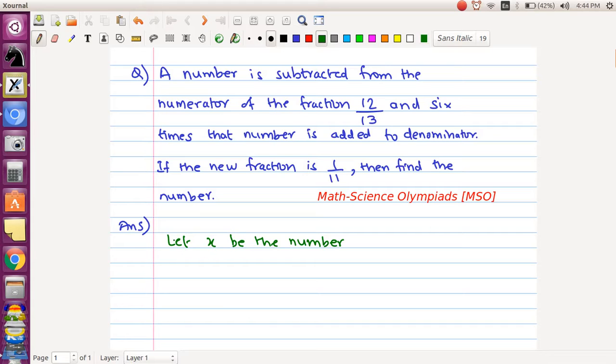Now according to the given information, let's formulate the equation. What is given to us is 12/13 is the fraction, so we subtract that number x, and at the denominator what we do is we add 6x. And the new fraction that is formed is given as 1/11. So now this equation is formed.